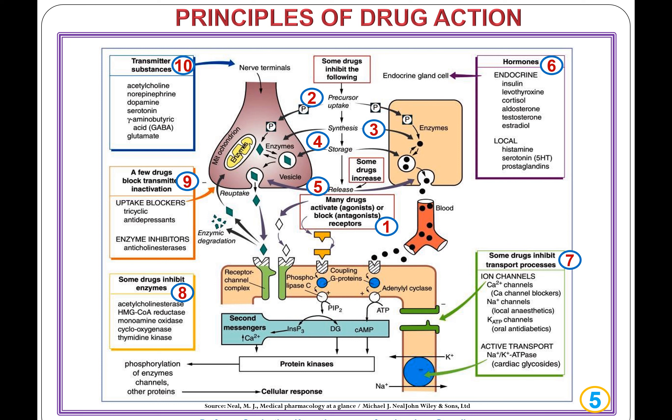Principle 7: some drugs inhibit transport processes, for example ion channels, calcium channels, sodium channels. Some activate transport, such as the sodium-potassium ATPase, as seen with cardiac glycosides.